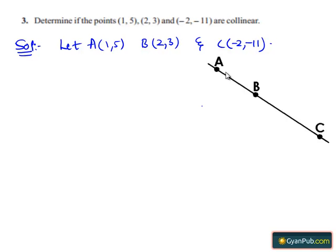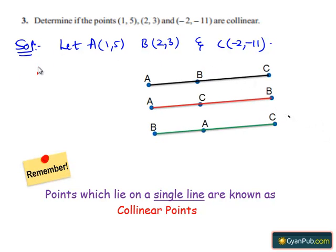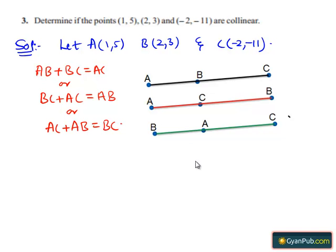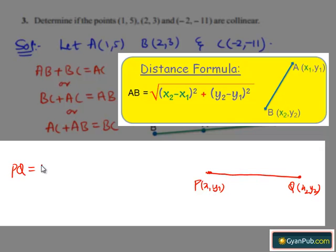We know that three points A, B, C are said to be collinear if they lie on the same straight line, that is, AB + BC = AC, or BC + CA = AB, or CA + AB = BC. We know that the distance between two points P(x1,y1) and Q(x2,y2) is given by PQ = √[(x2−x1)² + (y2−y1)²].